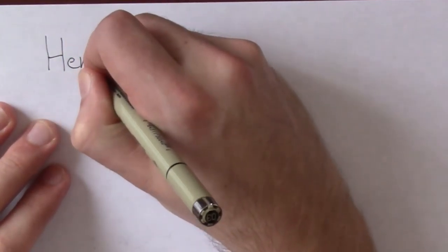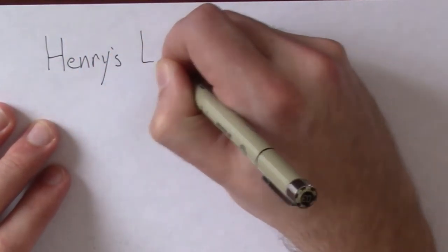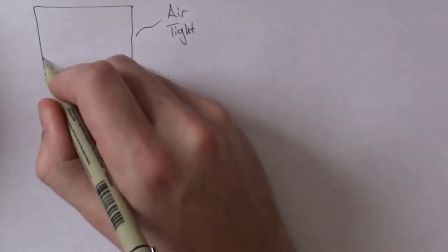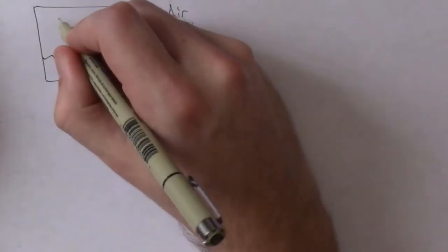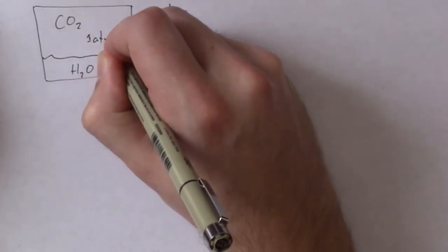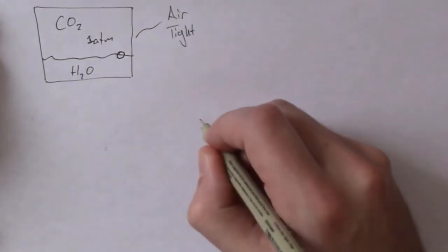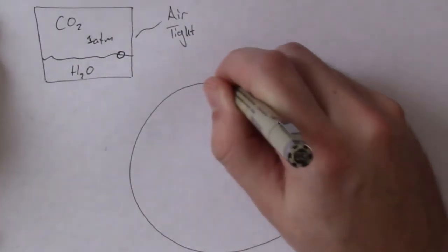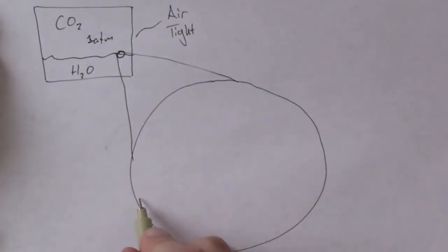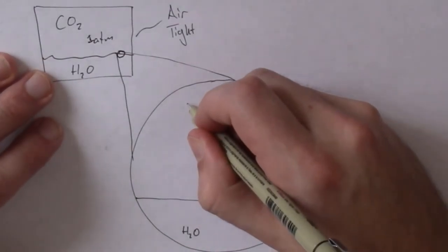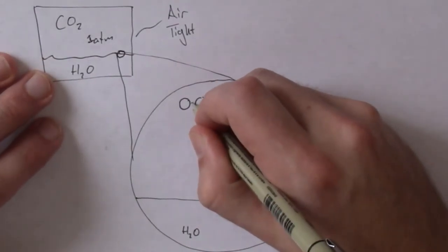Henry's law is to describe how much of a gas is going to dissolve into whatever liquid that you have. There's a bunch of different constants depending on the gas and the liquid and all that. Imagine that you have this airtight box and fill it up with a little bit of water and then you fill up the rest of it with CO2. What's going to happen is that those CO2 molecules are going to bounce around off of everything - the sides of the container and the surface of the water.